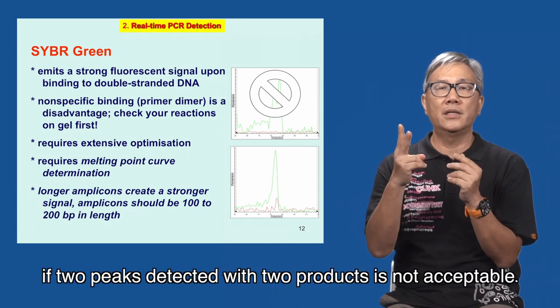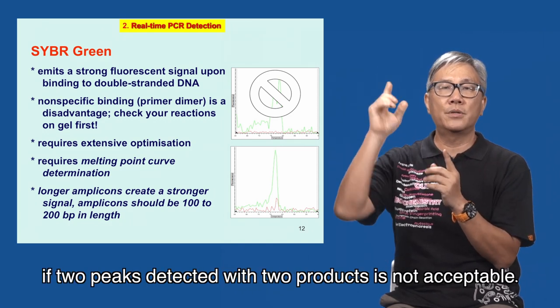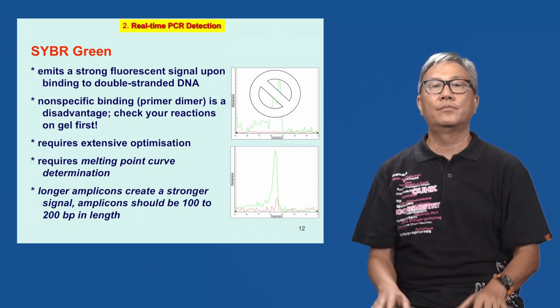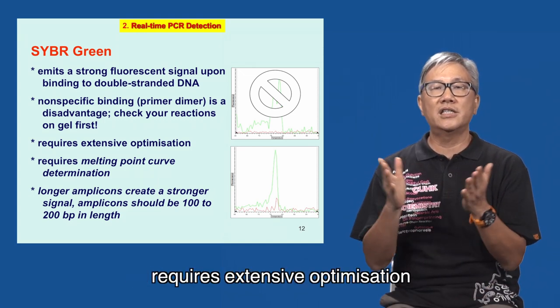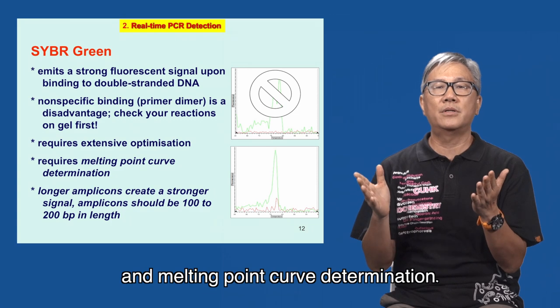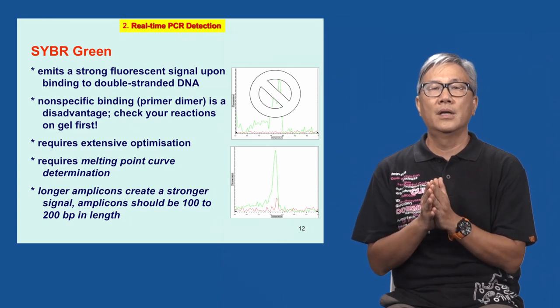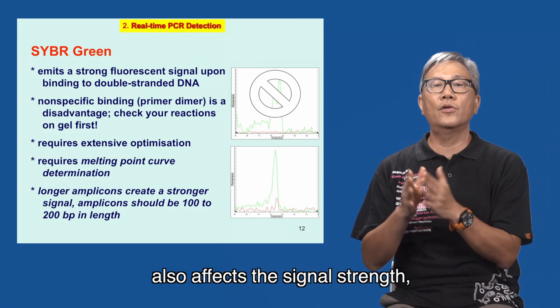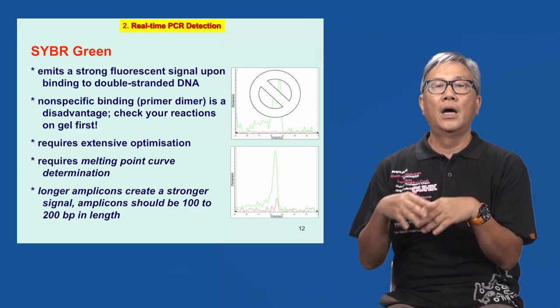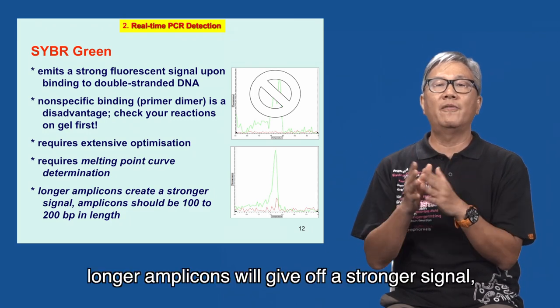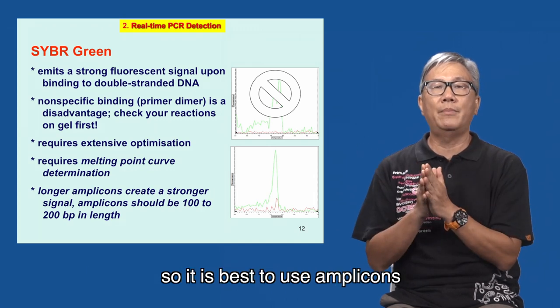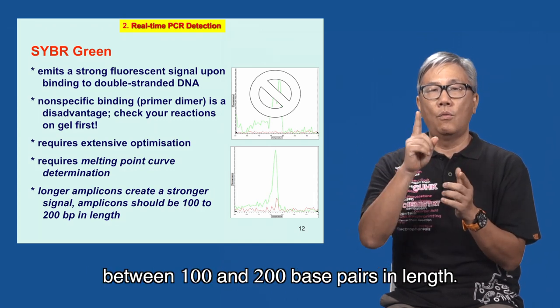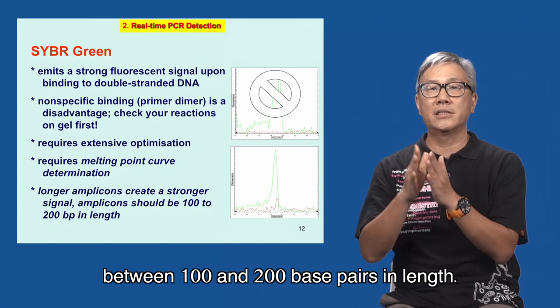For example, if two peaks are detected with two products, it is not acceptable. This method of SYBR Green detection requires extensive optimization and melting point curve determination. Since the size of the amplicons also affects the signal strength, longer amplicons will get a stronger signal, so it is best to use amplicons between 100 to 200 base pairs in length.